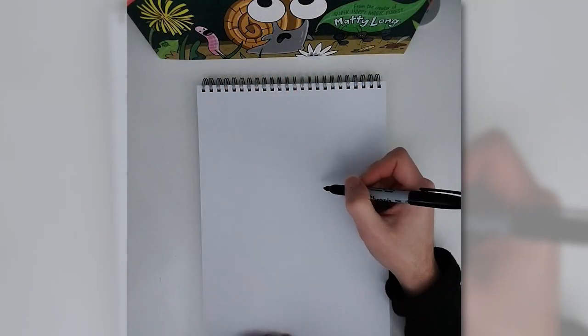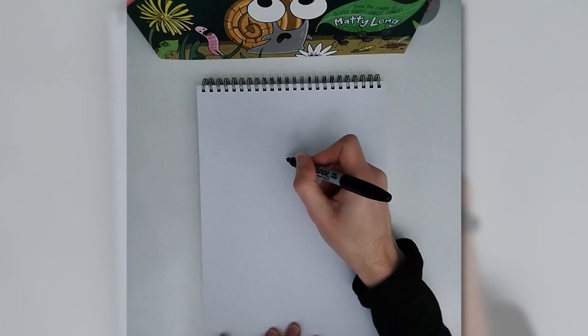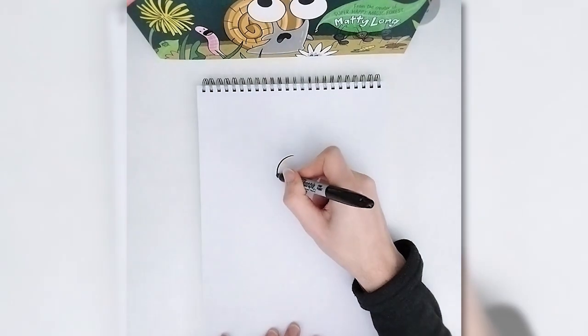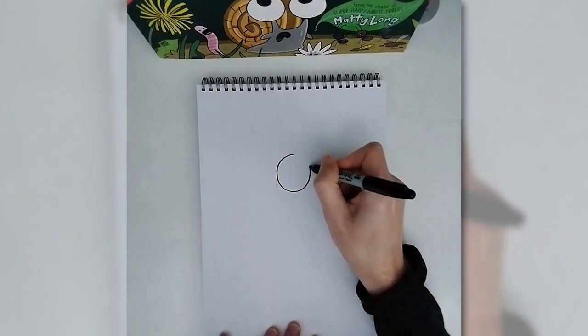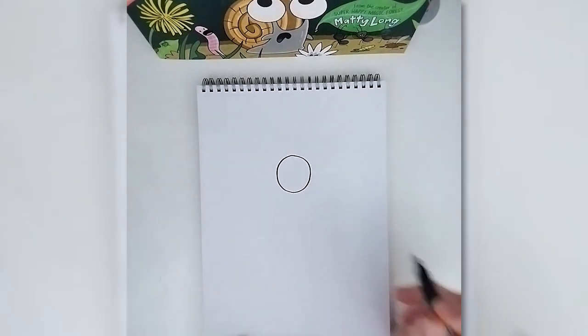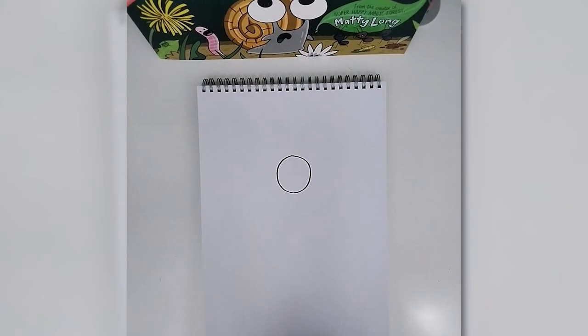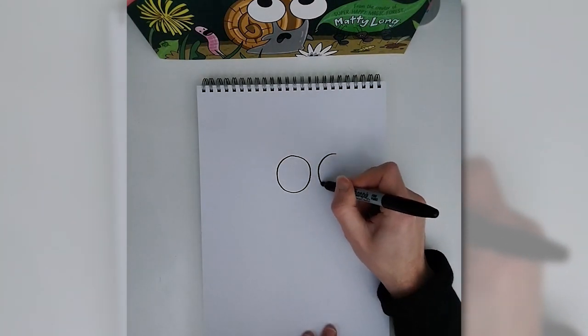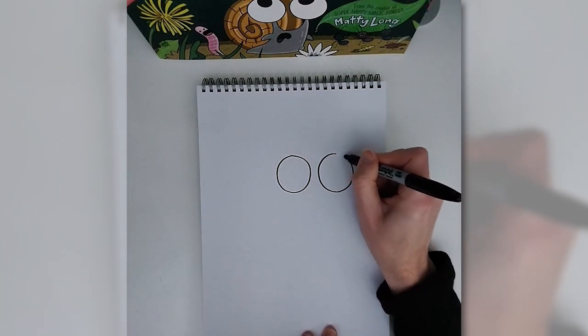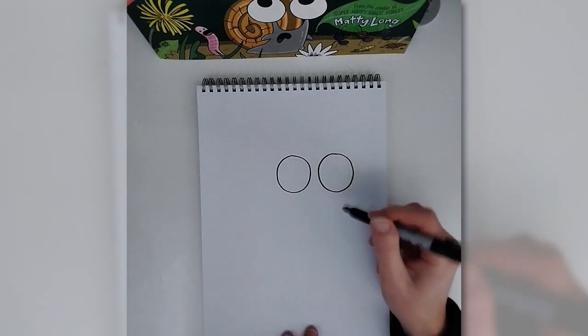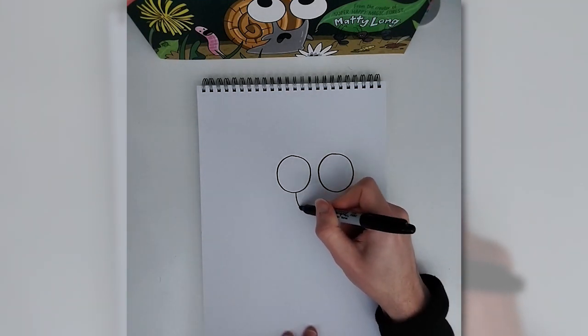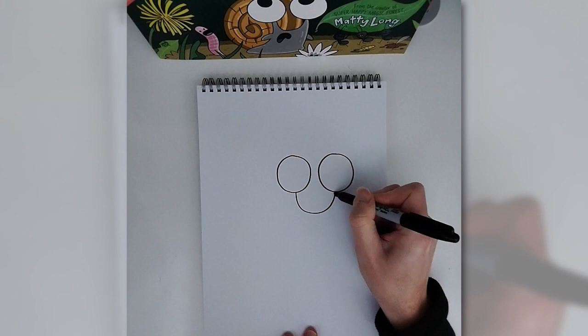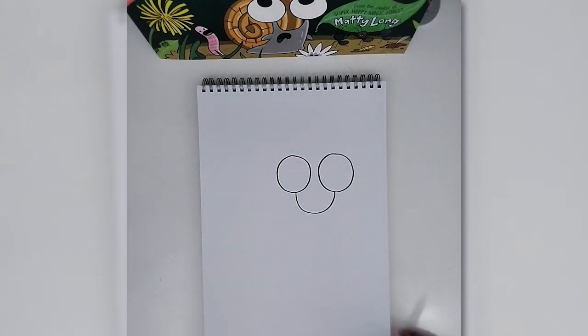Okay, so this is how I draw snail. I'm going to start with a large circle shape like that. And next to it, another large circle of similar sort of size. And we're just going to add a U shape to connect both those circles.